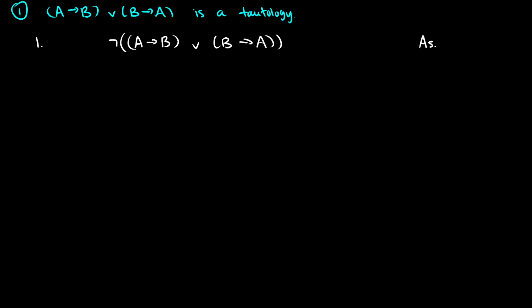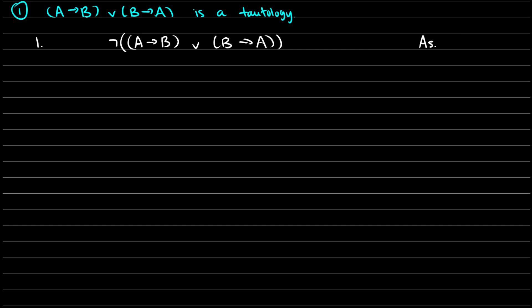For number one, we need to show that (A → B) ∨ (B → A) is a tautology, so I have set this one up. Now let's turn the lines to make things orderly. Remember, if you want to show that alpha is a tautology, what we have to do is start with not-alpha and then show that we get a contradiction in every single branch, so it closes.